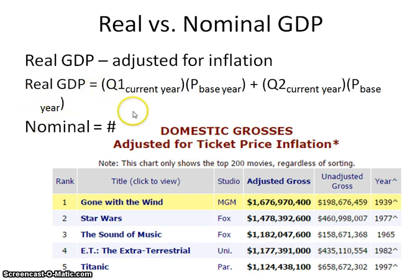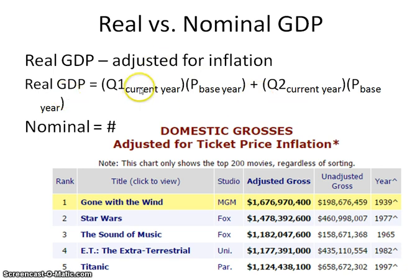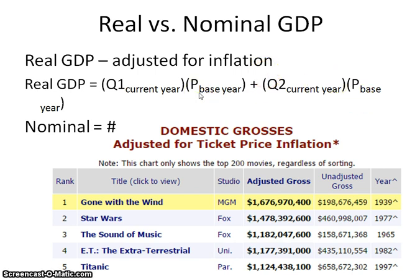The formula for real GDP uses the current year's quantity of goods times the price from the base year, summed across all components — consumption, investment, government spending, and net exports. You always use the same base year price for each component, so real GDP is really about quantity. Nominal GDP, by contrast, is unadjusted — it uses the price of the given year.